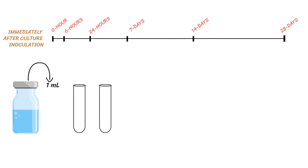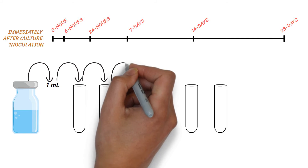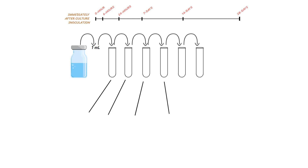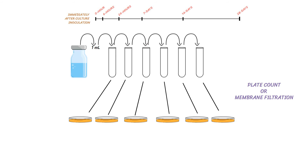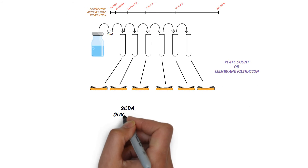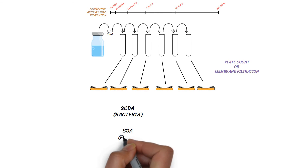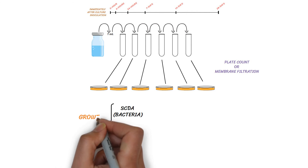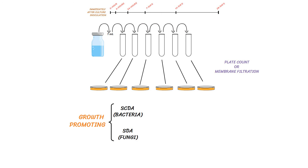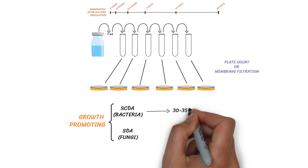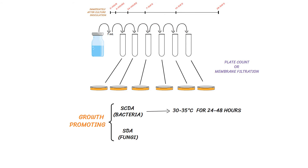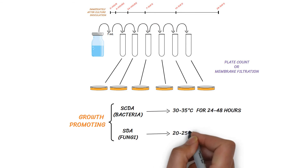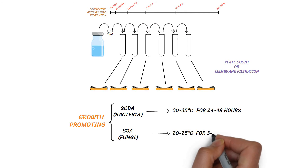At each time interval, perform a 10-fold serial dilution of the sample and enumerate the viable microorganisms by plate count or membrane filtration method. Use SCDA for bacterial cultures and SDA for fungal cultures. The media should be capable of growth promoting. Incubate SCDA plates at 30–35°C for 24–48 hours and SDA plates at 20–25°C for 3–5 days.